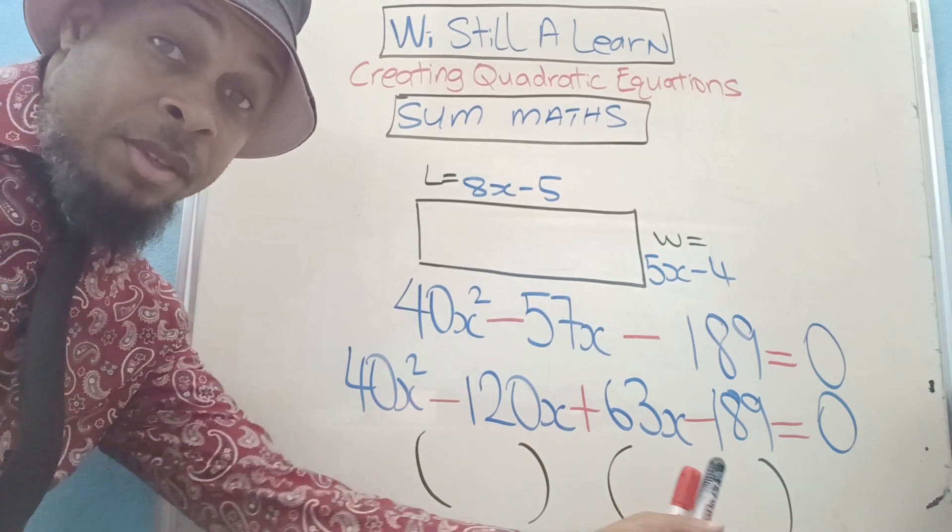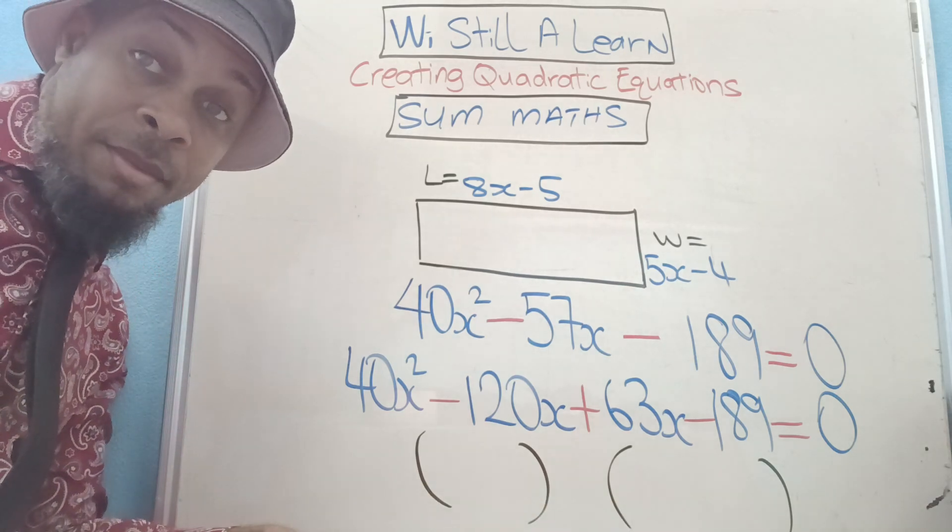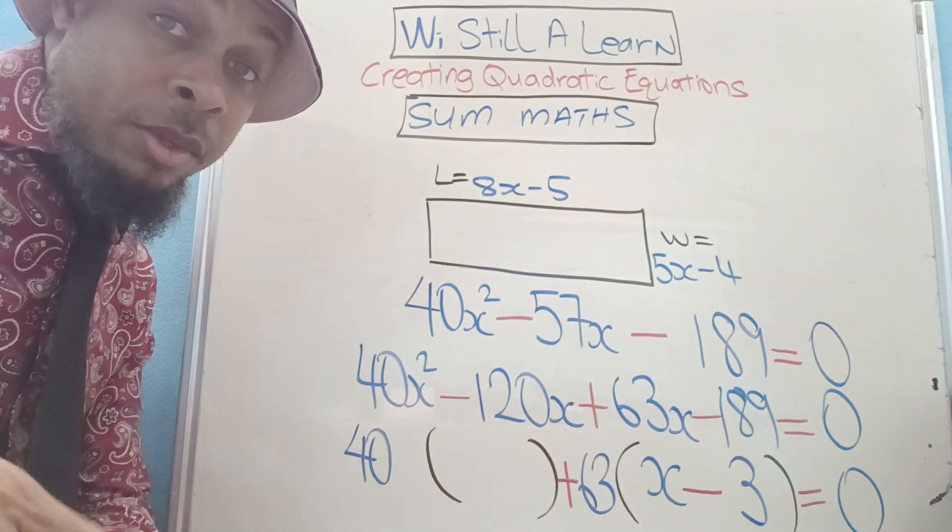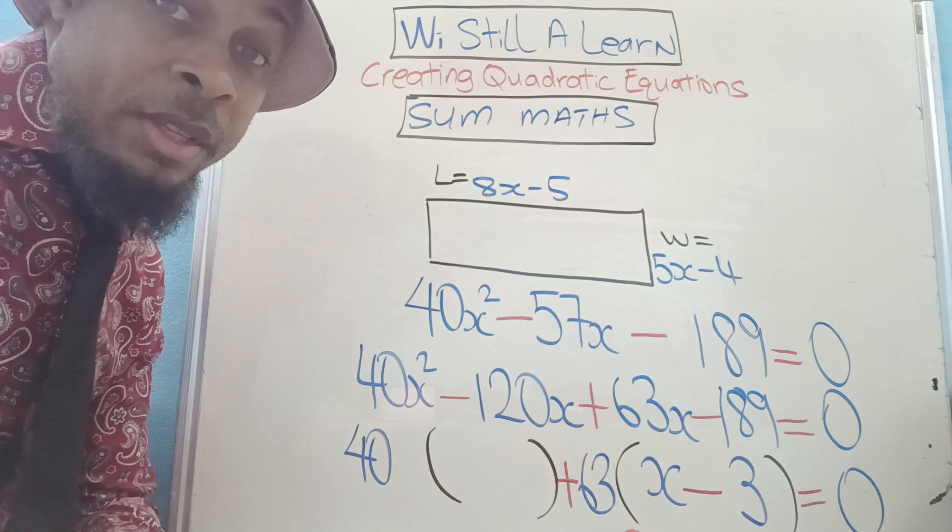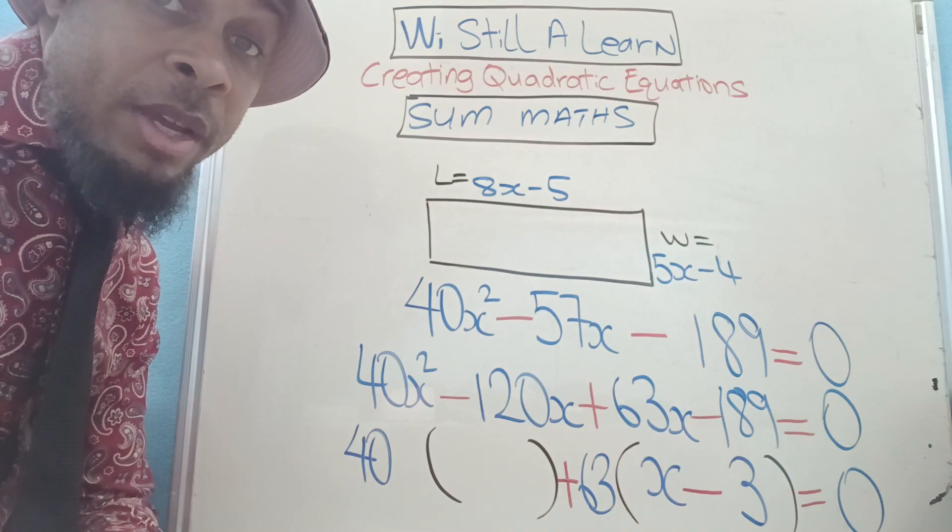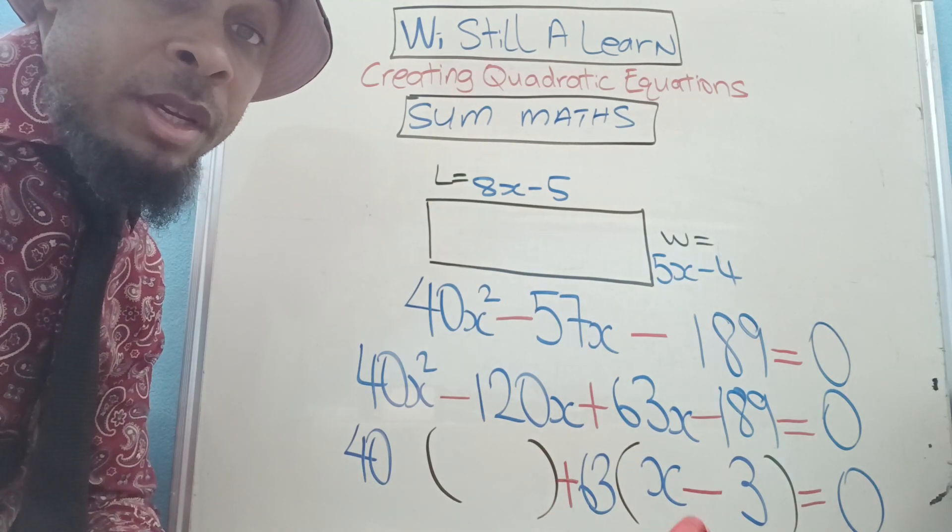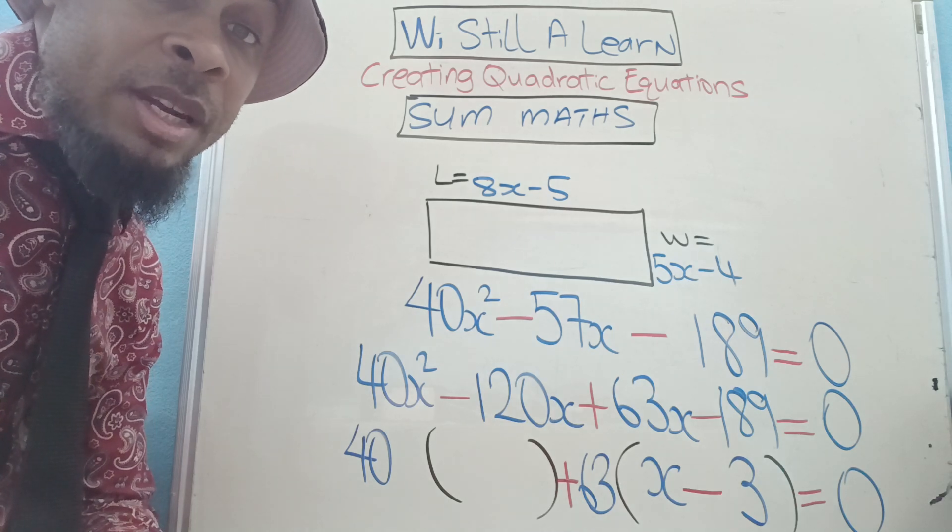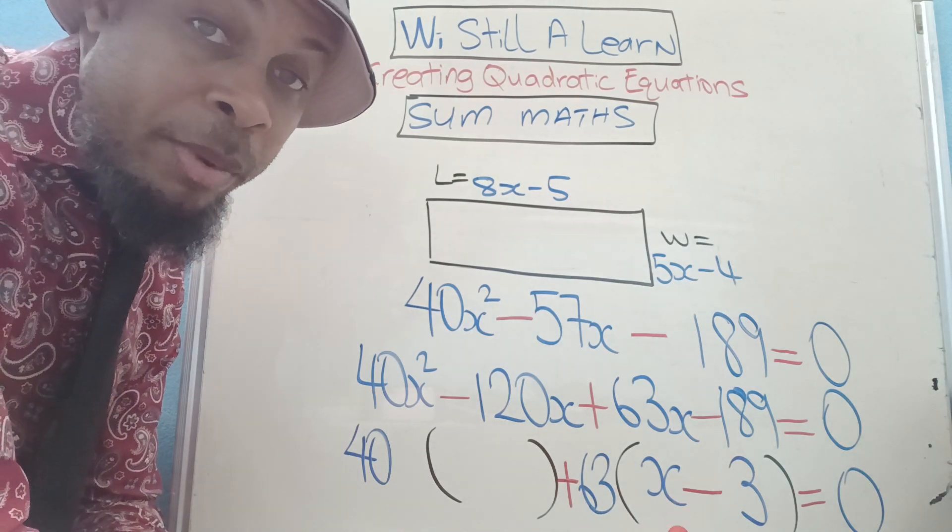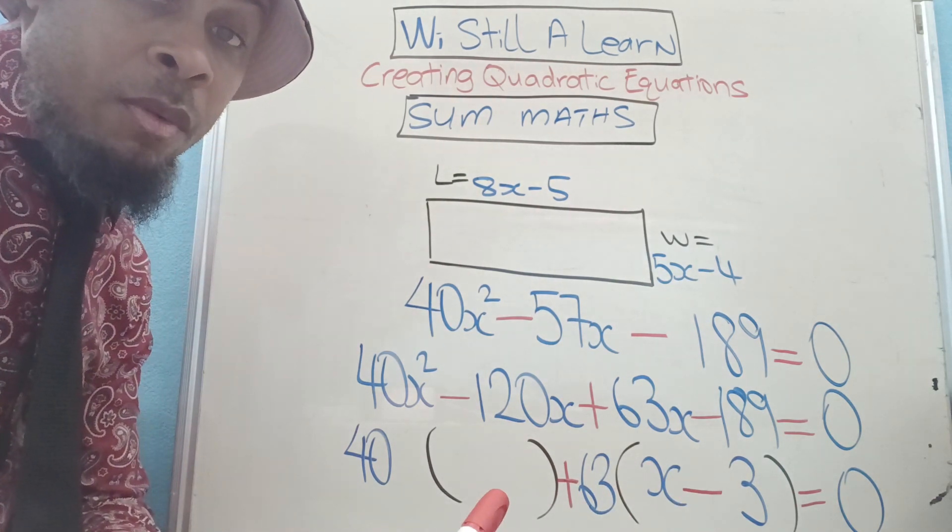The HCF of this and this was 63. Okay, so 63 times x is 63x. 63 times minus 3 is minus 189. We will copy and paste this over here.